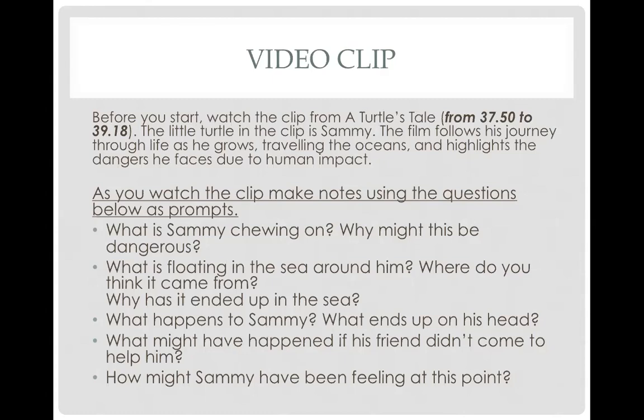So once you've done that, let's have a little chat about these questions together. What is Sammy chewing on and why might this be dangerous? I can't quite make it out — I can't tell whether it's a bit of log or a bit of tree, but it seems to be quite elastic. And if you think about what's floating around him, it looks like there's a lot of rubbish on the surface of the ocean. It could be some kind of debris, some kind of rubbish — it looks like it might be some kind of rubber. Now thinking about where it might have come from, the ocean doesn't produce rubbish so it's obviously coming from us. We produce an awful lot of rubbish across the world each year.